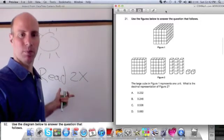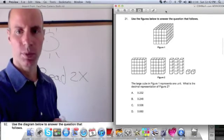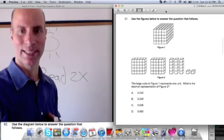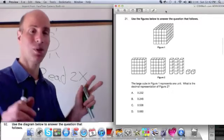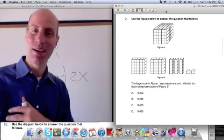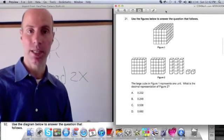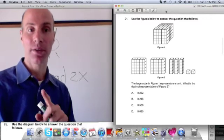So I'm going to draw from that when I do my calculations. Then I want to read the problem. And I read it twice. So here it goes. A large cube in figure one represents one unit. What is the decimal representation of figure two? I read it once. I read it. Did that make sense? Maybe it did. Maybe you read it, and you totally understand where to go with this. Maybe you have to read it again.